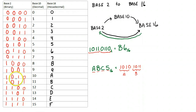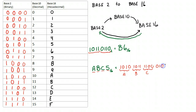C is 1100. That's my C value. And 5 is 0101, 0101. And that's 5.